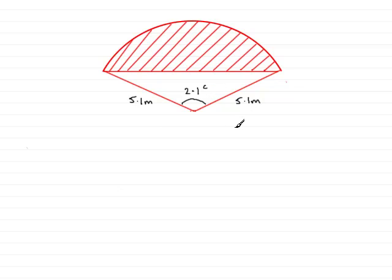As before, we find the area of the sector. The area of a sector is the fraction of the area of the complete circle, and that fraction will be 2.1 radians compared with the number of radians in one complete turn, which is 2 pi. This will be multiplied by the area of the complete circle, which is pi r squared, where the radius is 5.1 squared.